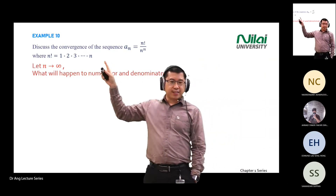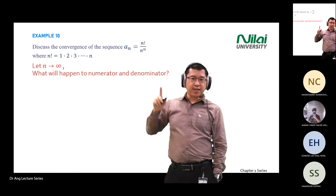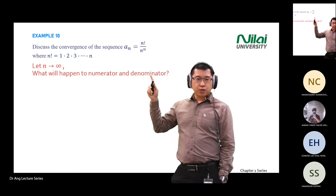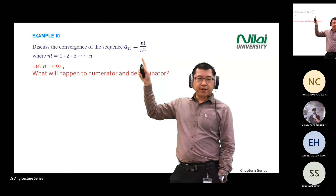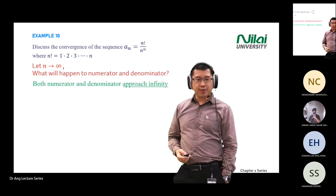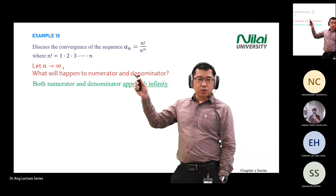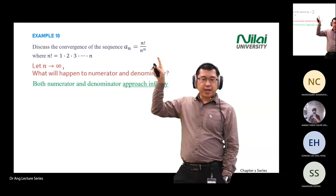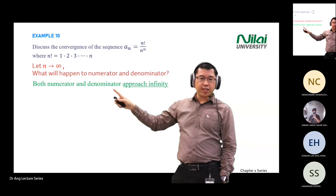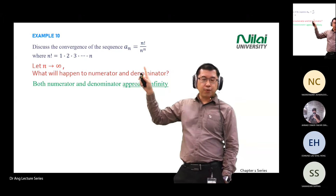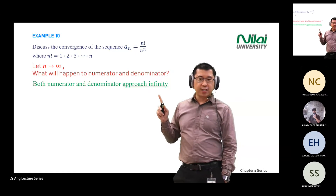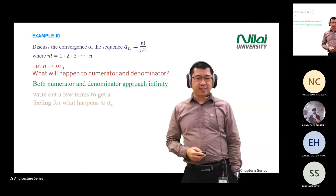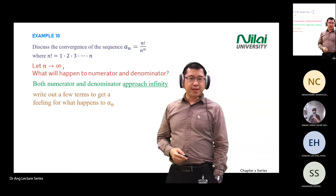If you increase n to infinity, the numerator n-factorial approaches infinity — you are multiplying infinitely many numbers. The denominator n^n also approaches infinity. So you have infinity divided by infinity — what do you get?